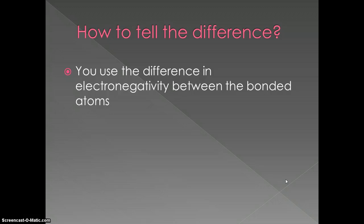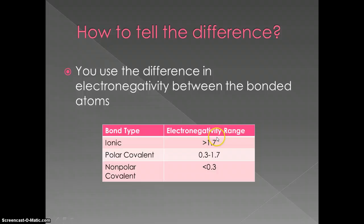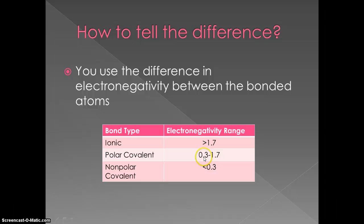To tell the difference between the two, we use the difference in electronegativity between the bonded atoms. Electronegativity is the pull that an element has on electrons when bonded. If the difference in electronegativity between two atoms is greater than 1.7, it will be ionic. If it's between 0.3 and 1.7, it's polar covalent. If it's less than 0.3, it's non-polar covalent, meaning equal sharing of electrons. In ionic bonding, the electron is basically given away entirely.